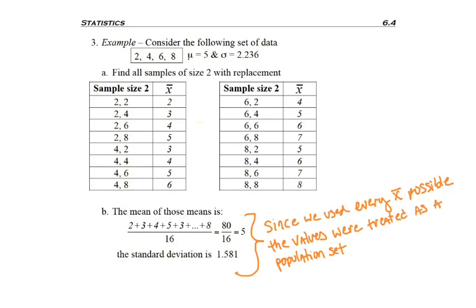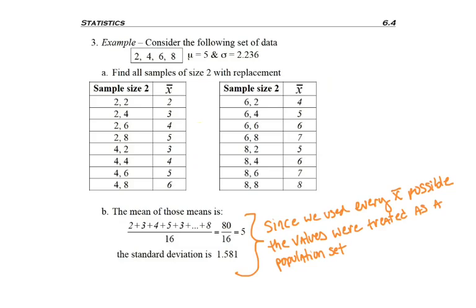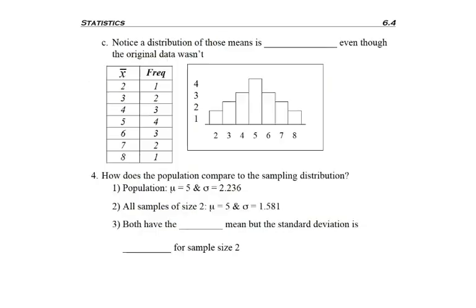I would come back to the page to find an average of 2 — and I can see that an average of 2 showed up once. Then I look for how many times the average was 3, and going back to the page I can find that 3 showed up twice. And that's how I made the distribution table we're looking at right here.